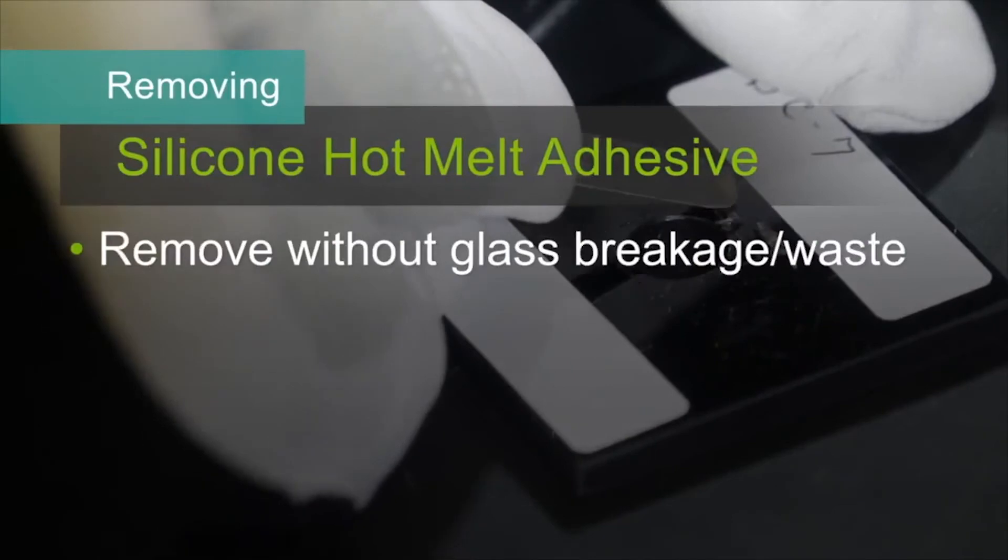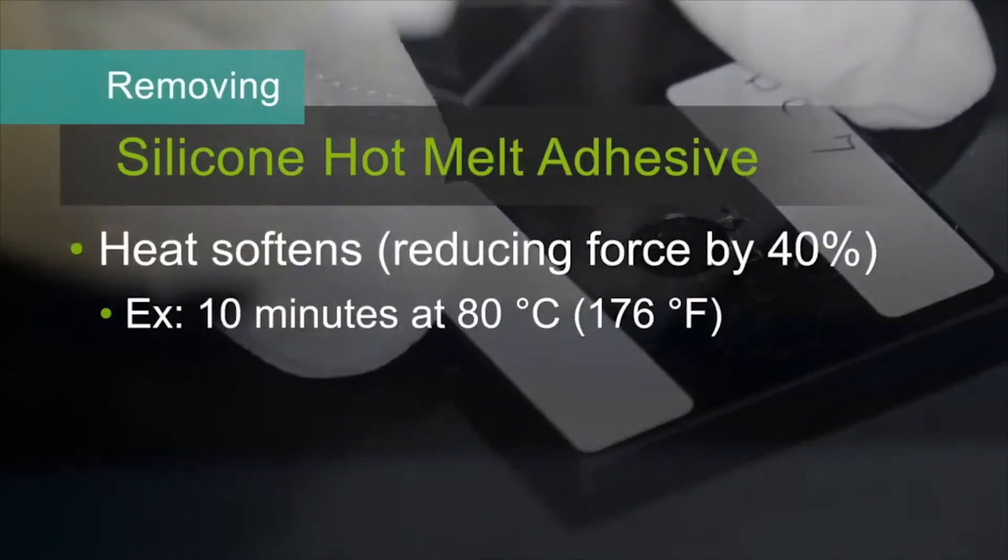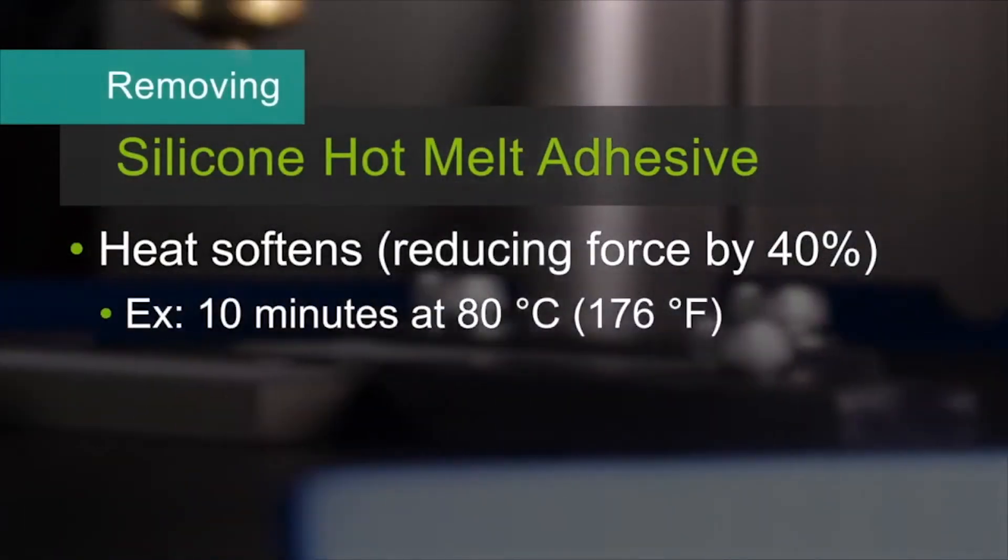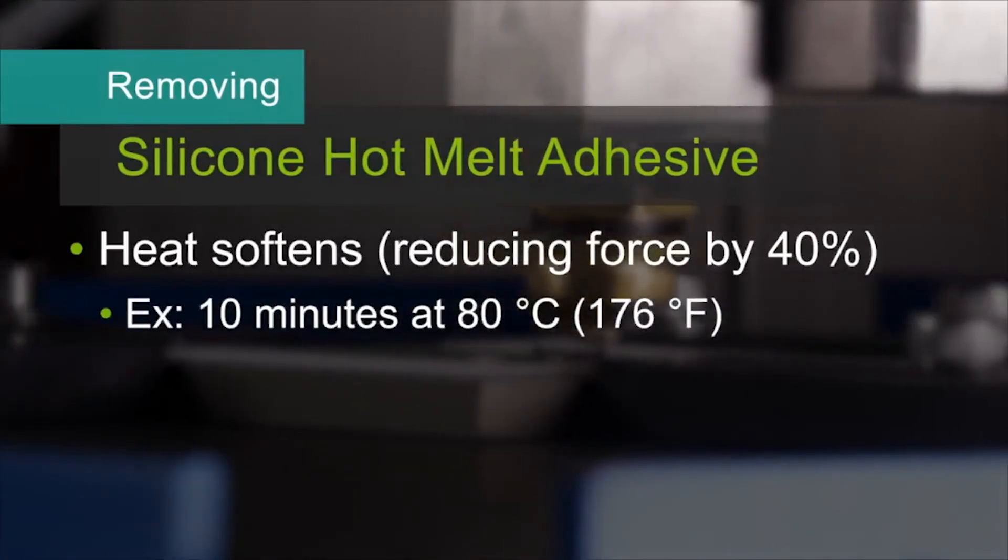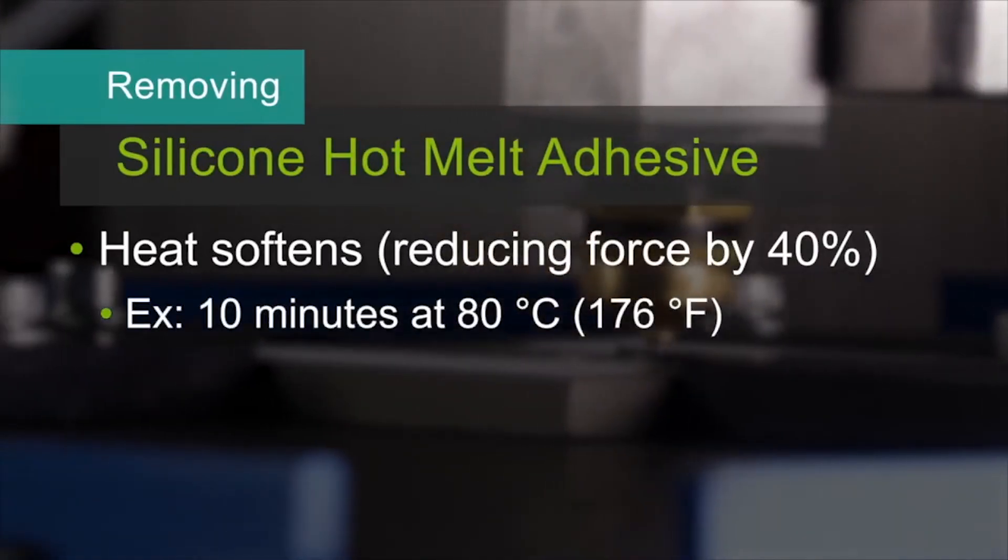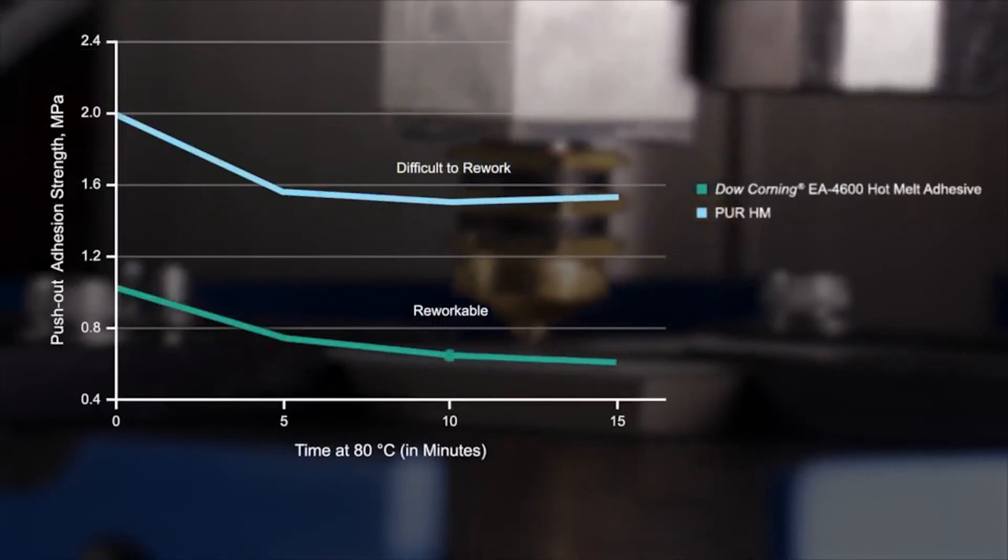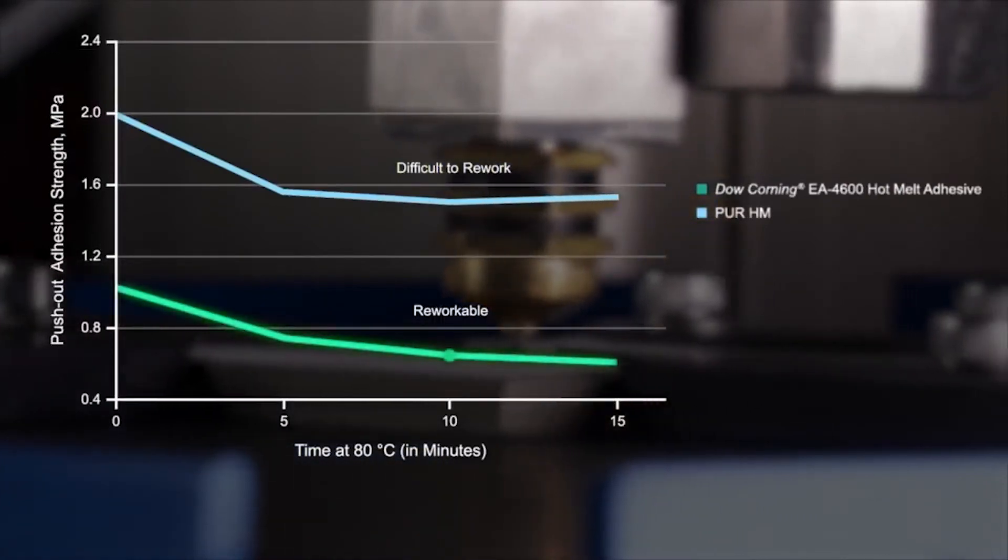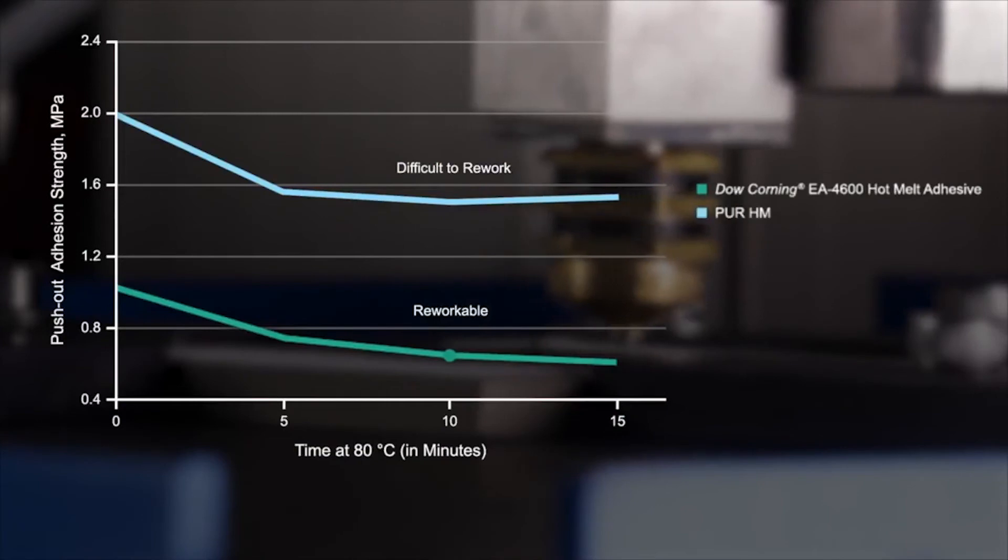For example, glass can be removed without breakage and then reused. The amount of force required to remove the silicone hot melt is reduced by 40% with some heating. After 10 minutes at 80 degrees Celsius, the Dow Corning EA 4600 adhesive softens, making it easier to remove.